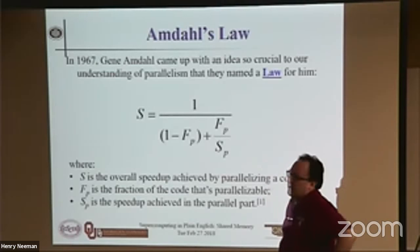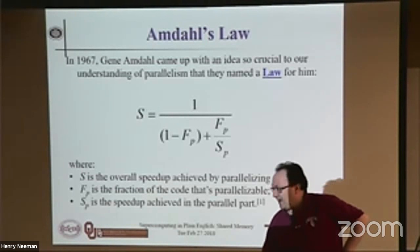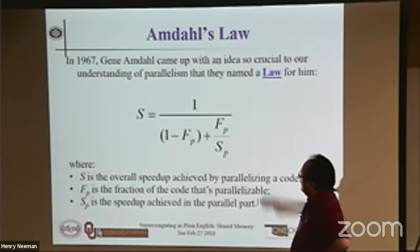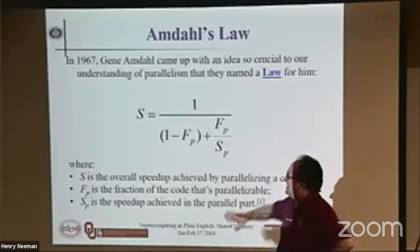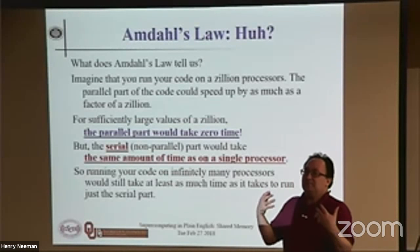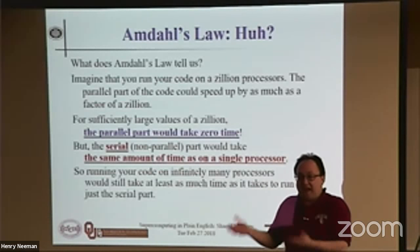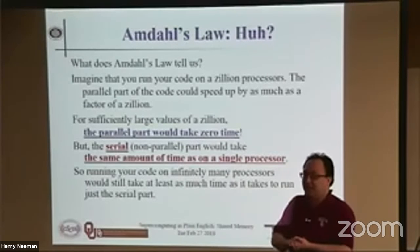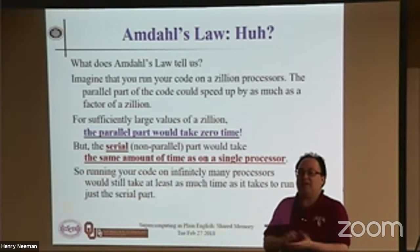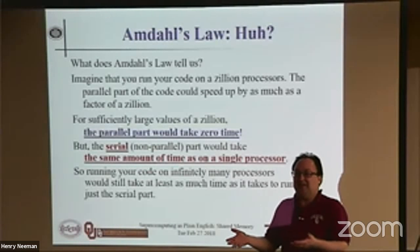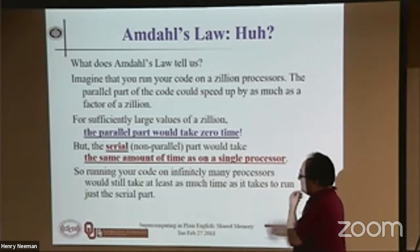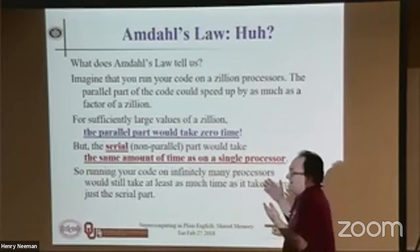Amdahl's Law. This goes back to Gene Amdahl. Any code has a part that can be parallelized and a part that can't be parallelized. The problem is, no matter how many processors you throw at the part that can be parallelized, the part that can't be parallelized still can't be parallelized — it's going to take the same amount of time no matter what. The serial, non-parallel part takes the same amount of time regardless.